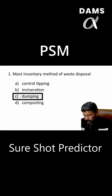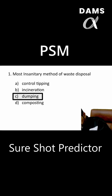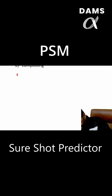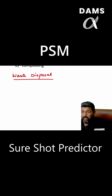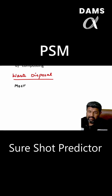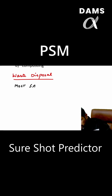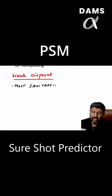Now let us quickly discuss what are the other methods of waste disposal. Number one, the most insanitary method we have already read — it is dumping. The most sanitary method is controlled tipping, or you can say landfill.